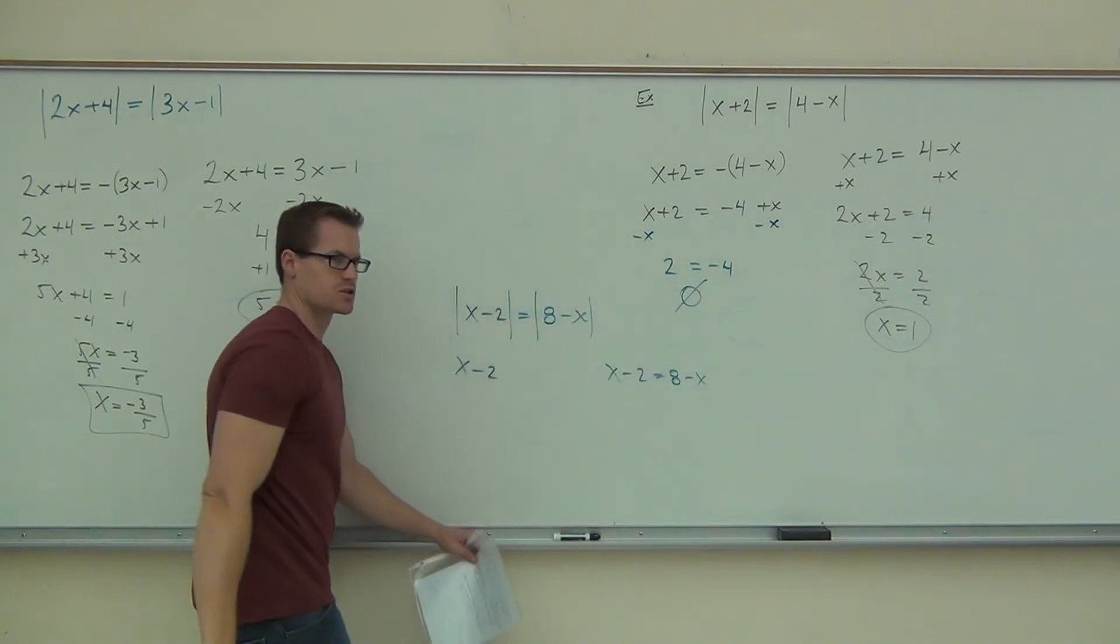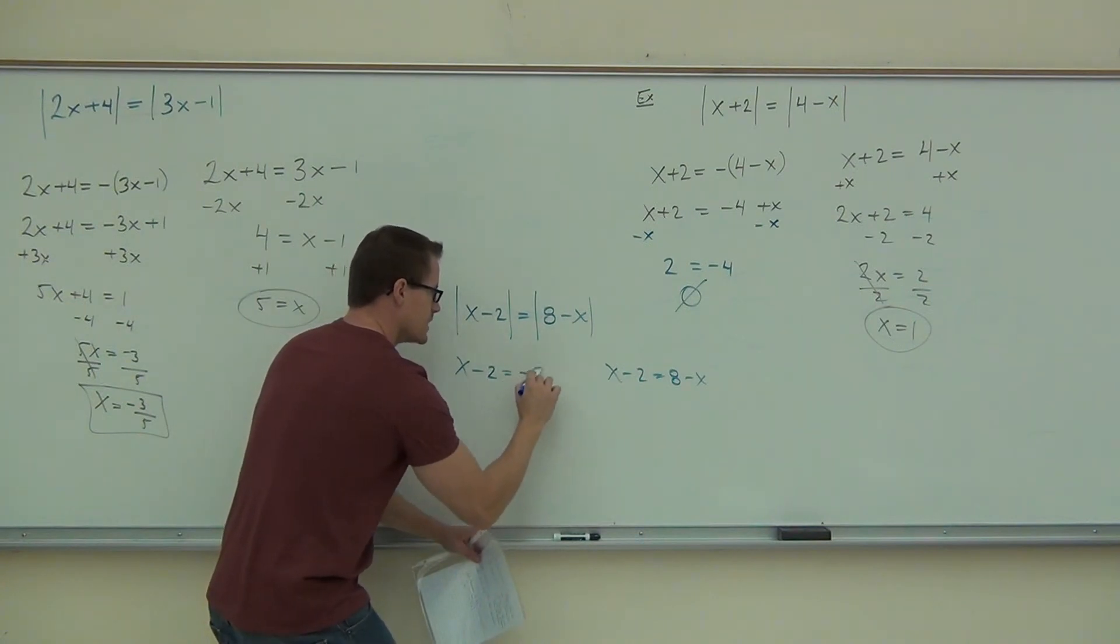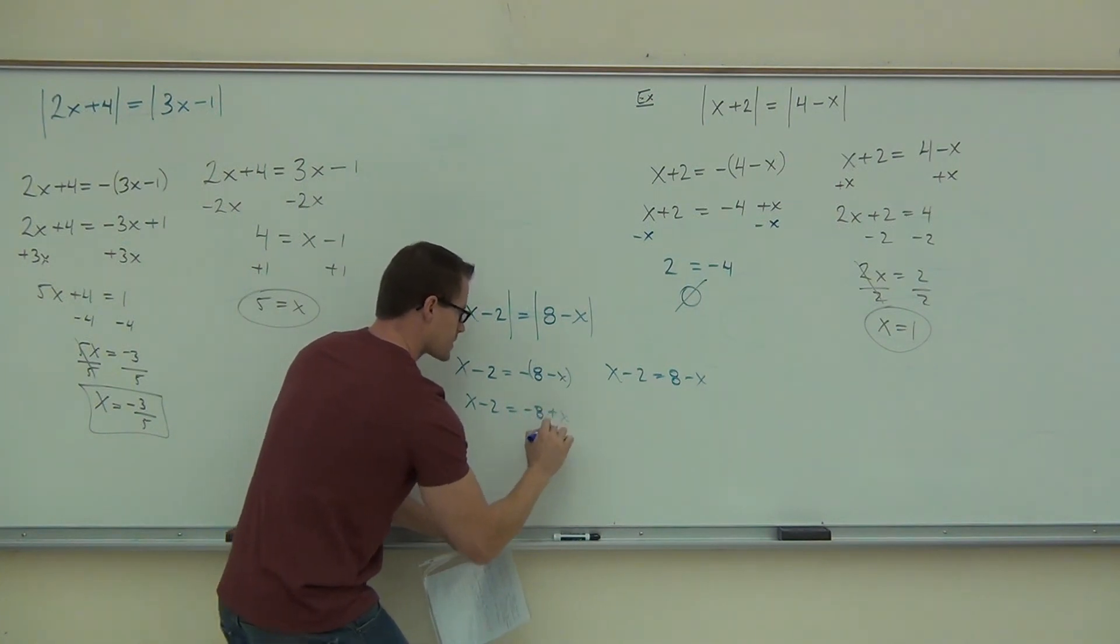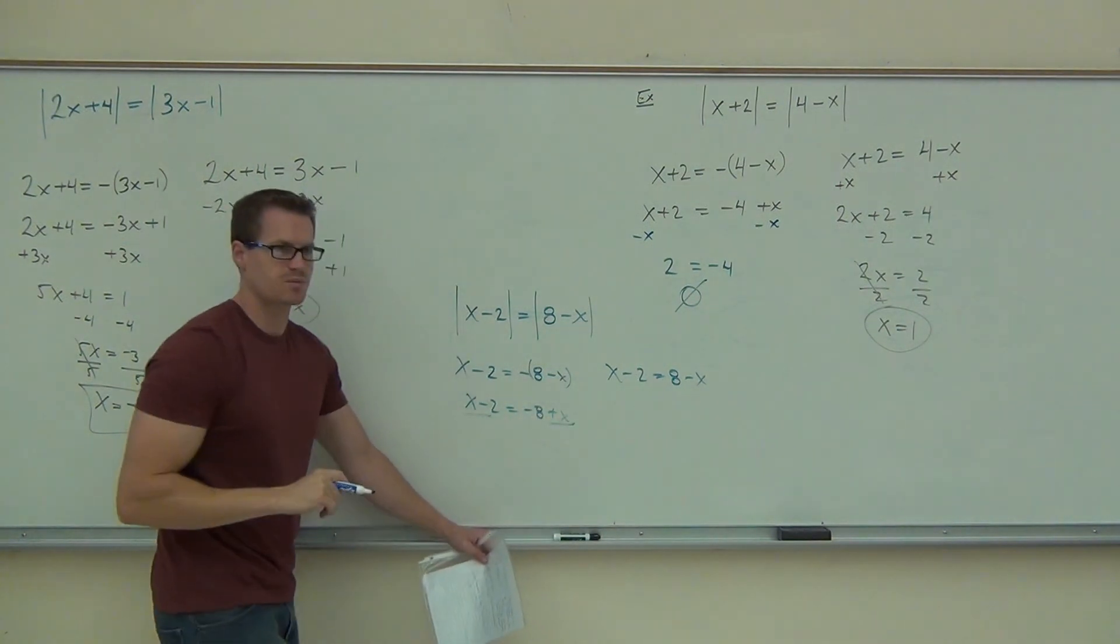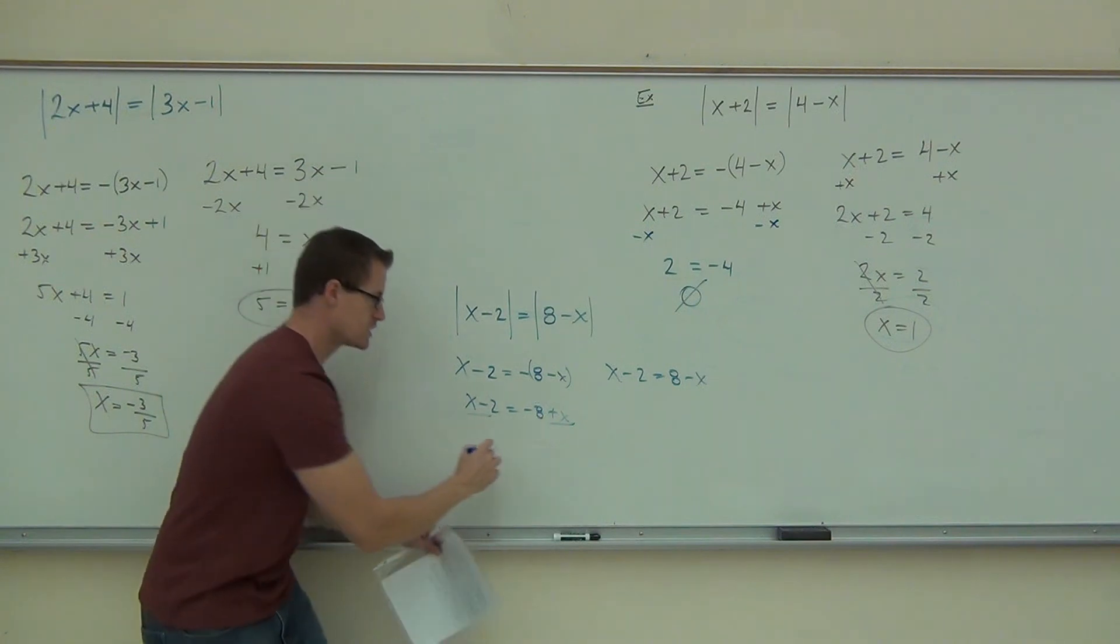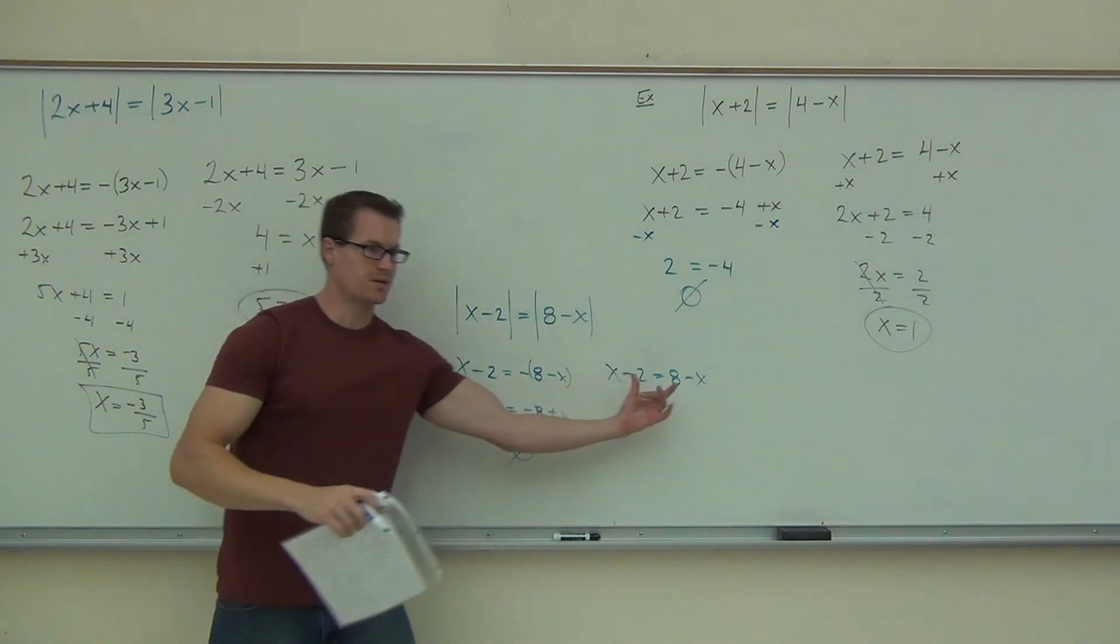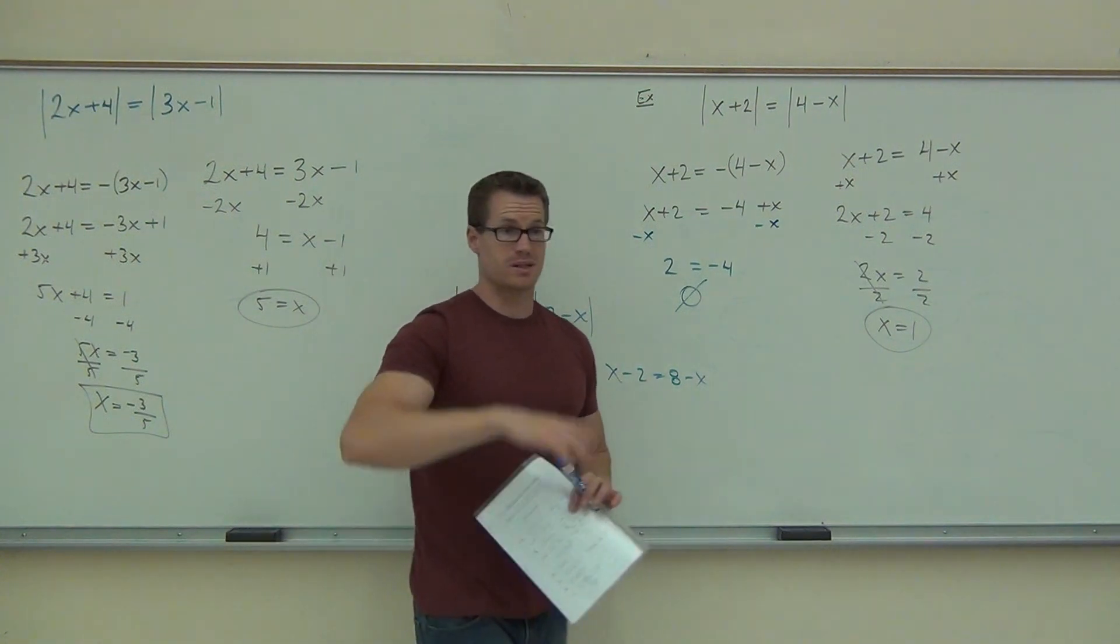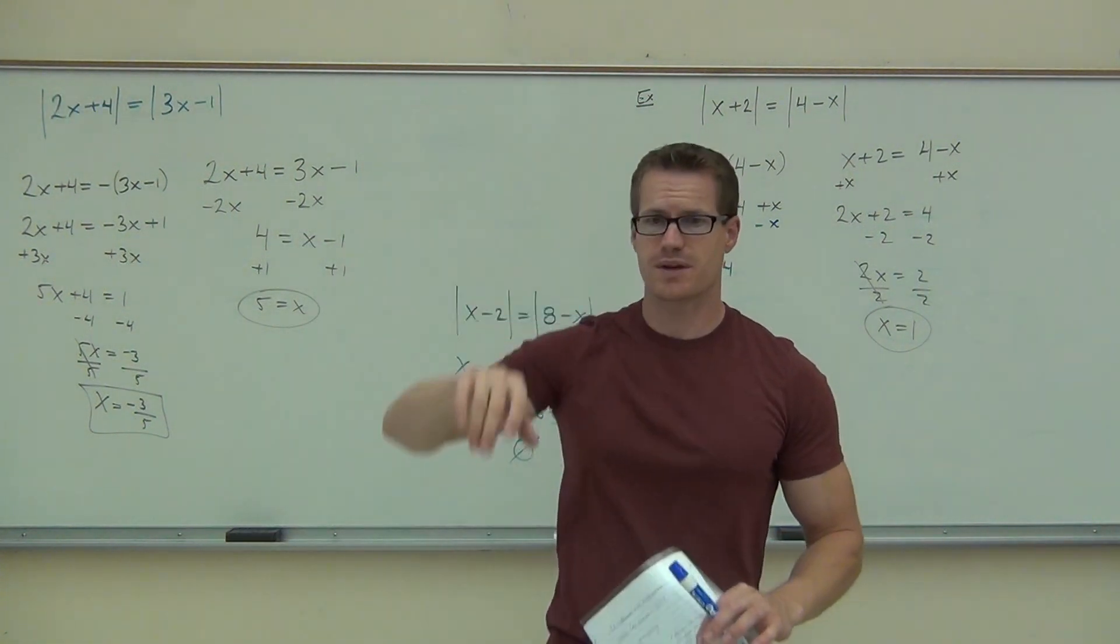This one's going to give you a solution. However, when you do x minus 2 equals negative 8 minus x, and you get x minus 2 equals negative 8 plus x, look at how those x's are going to simplify out of this expression. This one's going to give you no solution. This one will give you just one solution, whatever you're going to get out of that. How many questions have we talked about today? Feel okay with this? Good. That's fantastic. Thank you very much.